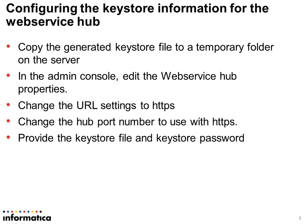The keystore file which we have created can now be used for the web service hub. We need to configure the keystore information for the web service hub on the admin console. First, we need to copy the generated keystore file to a temporary folder on the server. In the admin console, we need to edit the web service hub properties, change the URL settings to HTTPS, change the hub port number to use with HTTPS, and provide the keystore file location and the keystore password. We would go for a live demo of this step now.